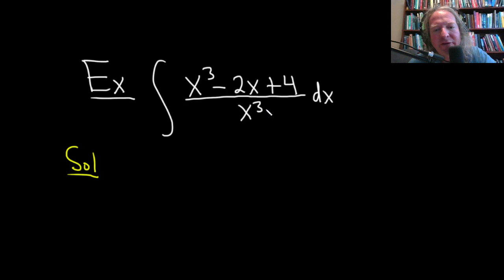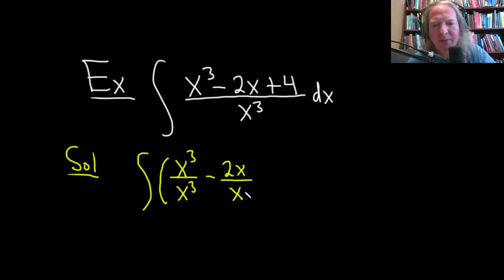Because we have a single term on the bottom, this is called a monomial, a good idea is to try to break this up into lots of little pieces. So we still have the integral sign because we're not integrating yet. It'll be x cubed over x cubed, and then minus 2x over x cubed, and then plus 4 over x cubed like that.